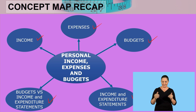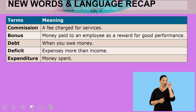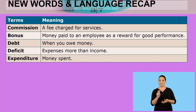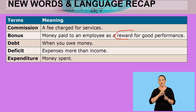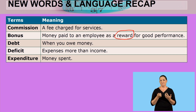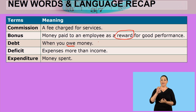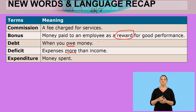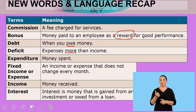The words we looked at: Commission — a fee charged for services. Bonus — money paid to an employee as a reward for good performance. Deficit — when expenses are more than income. We don't want those two things.